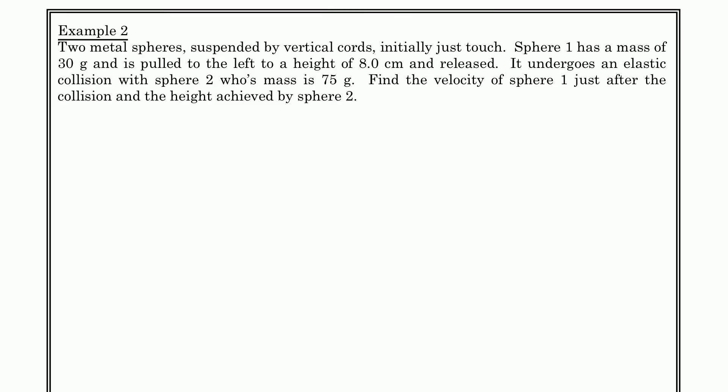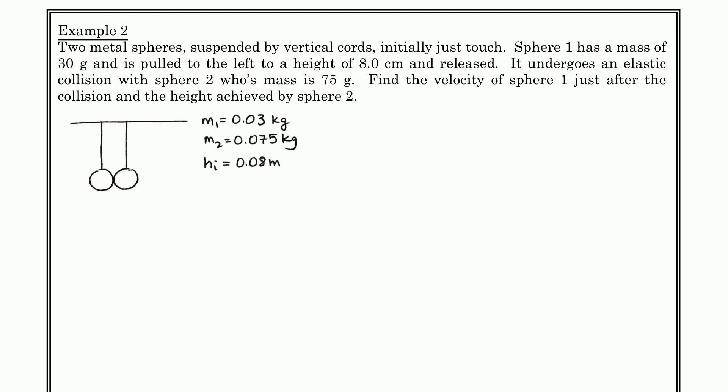Let's look at a different type of elastic collision. Two metal spheres are suspended by vertical cords, and initially they're just touching. Sphere 1 has a mass of 30 grams; it's pulled to the left and raised to a height of 8 centimeters, then released. It undergoes an elastic collision with sphere 2, whose mass is 75 grams. We need to find the velocity of sphere 1 just after the collision, and find the height achieved by sphere 2 at its maximum. We'll divide this into steps, and first find the initial speed of M1 right before the collision.